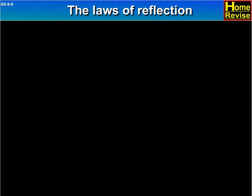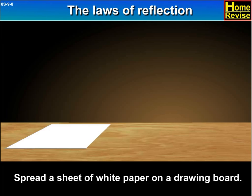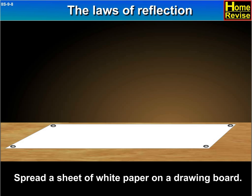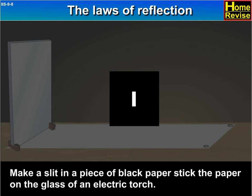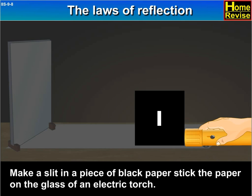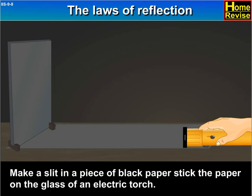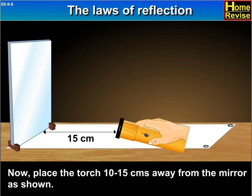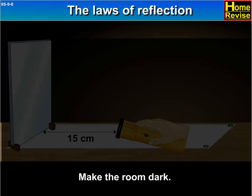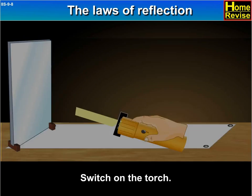The Laws of Reflection. Spread a sheet of white paper on a drawing board. Fix a plain mirror upright at one end of the paper. Make a slit in a piece of black paper and stick the paper on the glass of an electric torch. Place the torch 10 to 15 cm away from the mirror. Make the room dark and switch on the torch.